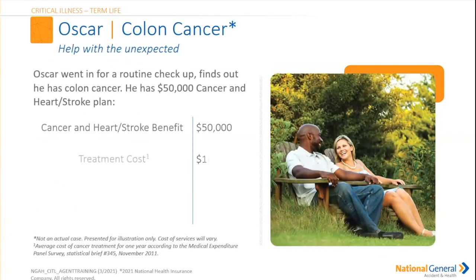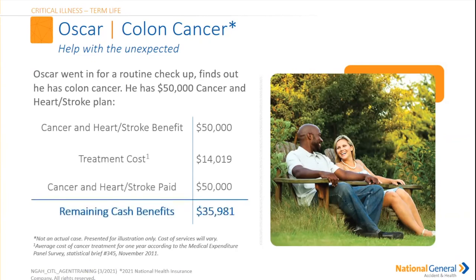Let's look at Oscar here. Oscar went in for a routine checkup and found out he has colon cancer. He has a $50,000 cancer, heart and stroke plan. The treatment cost for that colon cancer was $14,019. The cancer, heart and stroke plan paid $50,000, so the remaining cash benefit was $35,981.